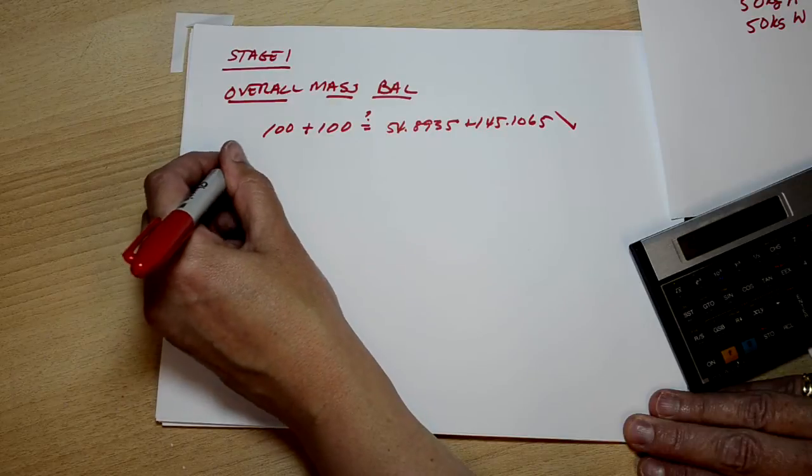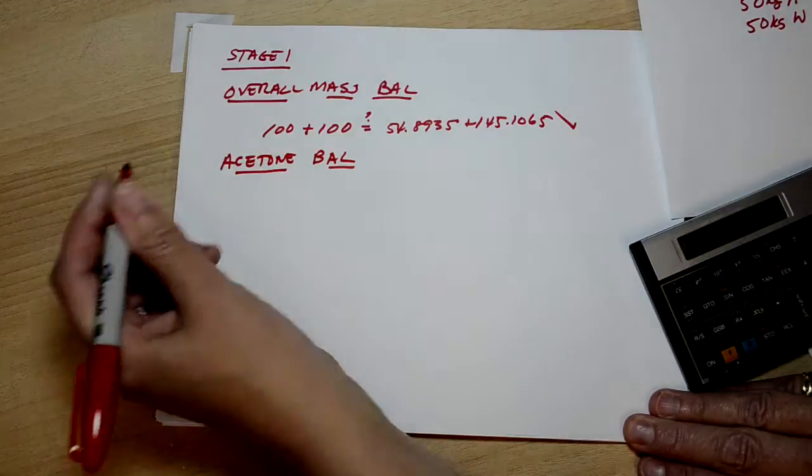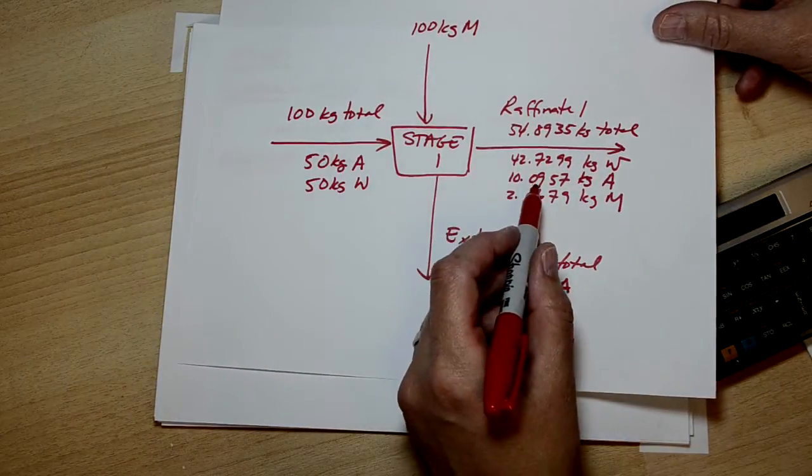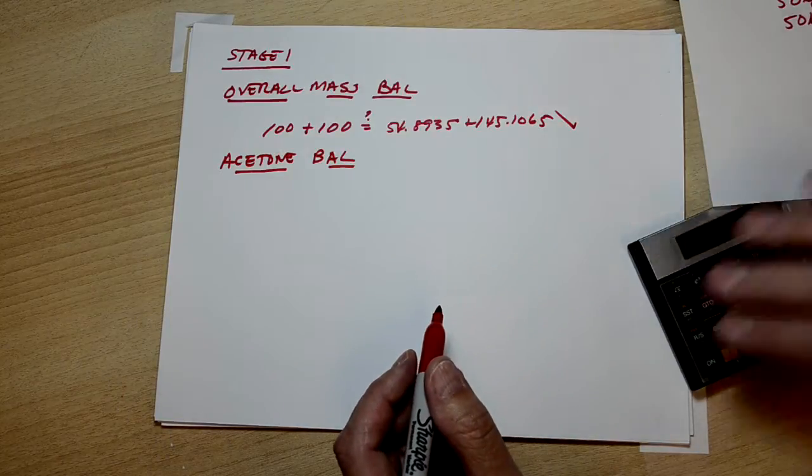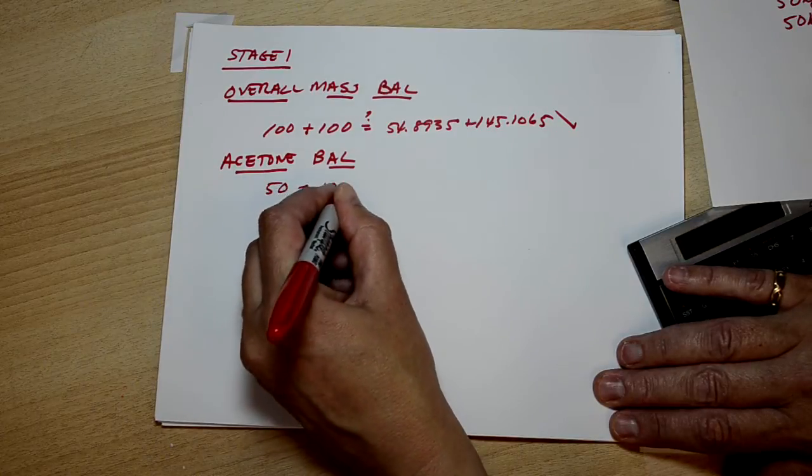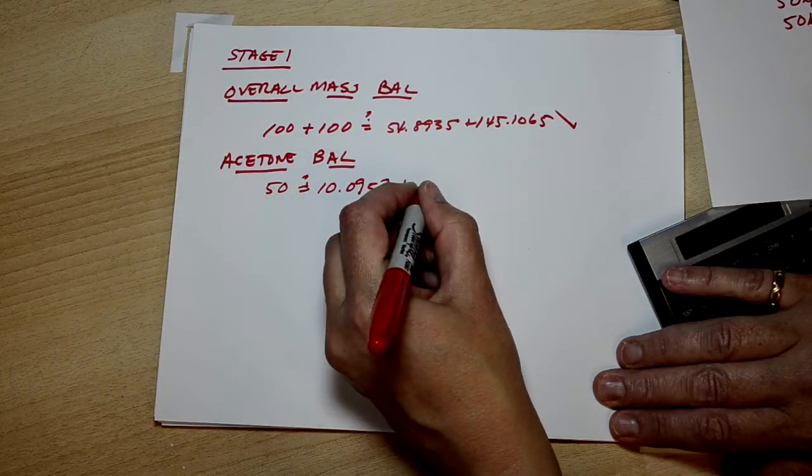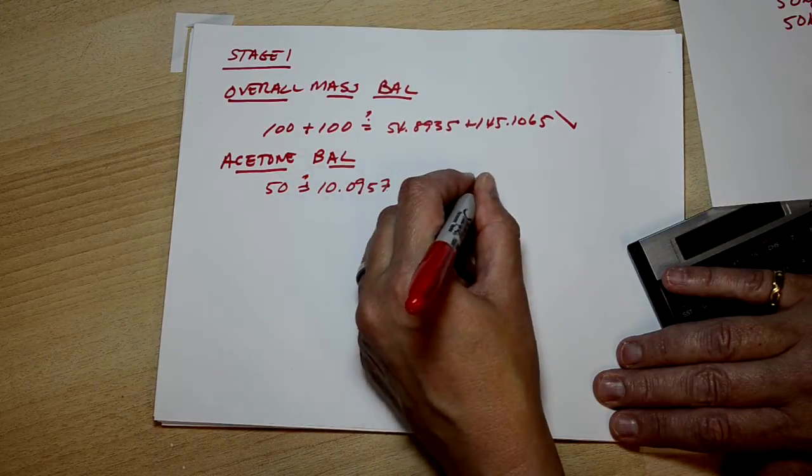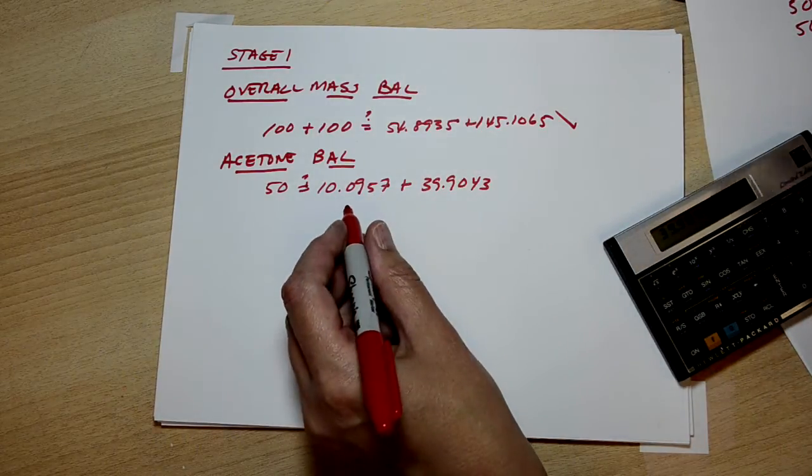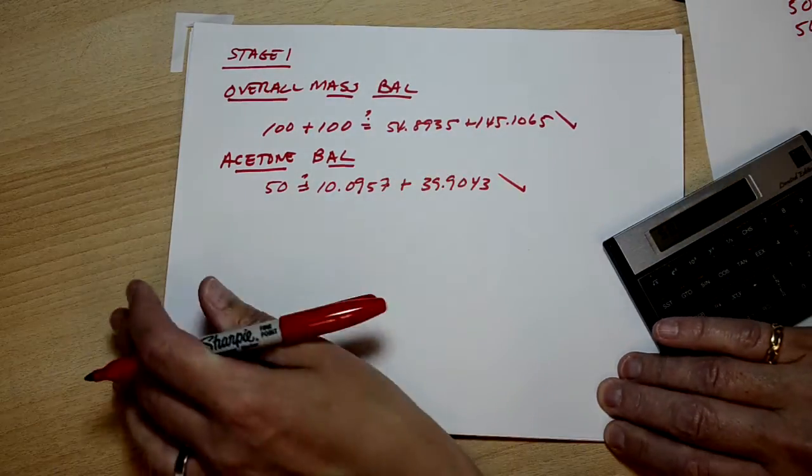We can do the acetone balance. And we have 50 kilograms come in, 10 and change, 39 and change. Looks pretty good. Let's do it formally. 50 in, 10.0957 out, 39.9043 out. Exactly. Things are going well.